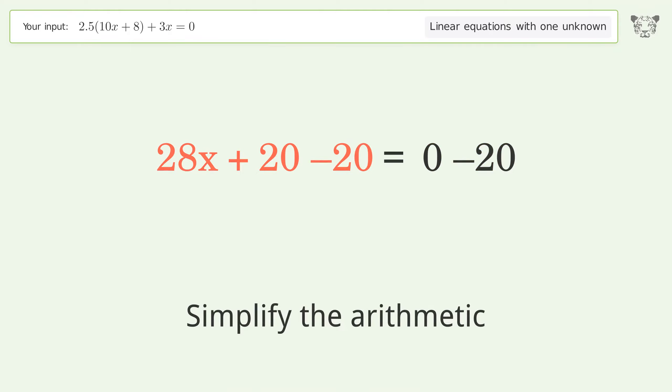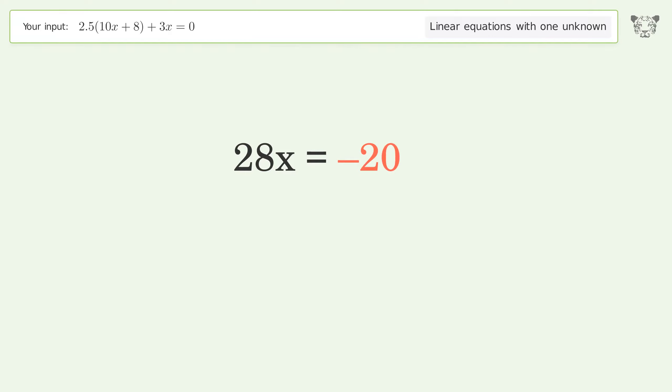Simplify the arithmetic. Isolate the x. Divide both sides by 28.